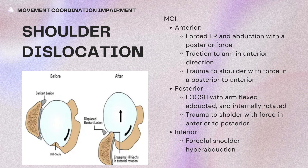Anterior shoulder dislocations are the most common at 95 percent. Subsequent injuries can include a Bankart fracture and Hill-Sachs lesion — when the humeral head anteriorly dislocates, the anterior glenoid rim breaks off (Bankart lesion) and the humeral head hits the glenoid rim creating a lesion (Hill-Sachs lesion). Mechanism for anterior dislocation is forced external rotation and abduction with a posterior force, or traction to the arm anteriorly, or trauma in a posterior-to-anterior direction. Posterior dislocation results from a fall on an outstretched arm with the arm flexed, adducted, and internally rotated.